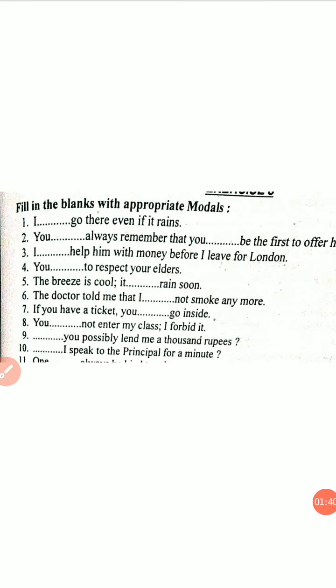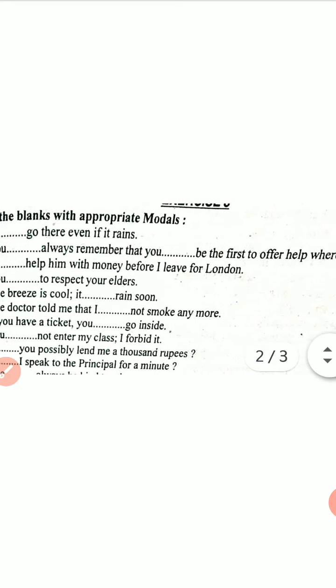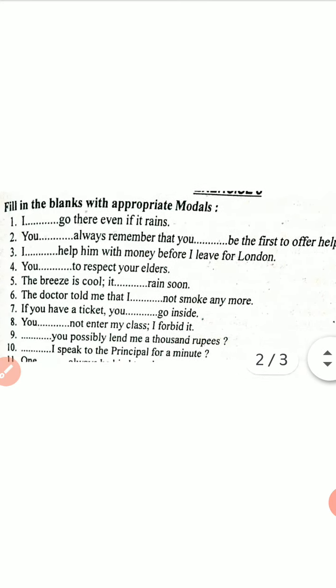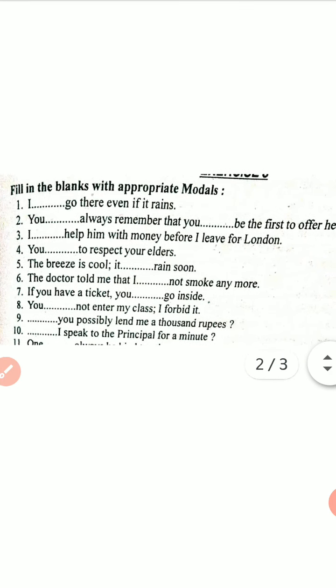Now here is an exercise based on modals. First sentence: 'I dash go there even if it rains' — I must go there even if it rains. Second sentence: 'You dash always remember that you dash be the first to offer help wherever needed' — you should always remember that you should be the first to offer help wherever needed.